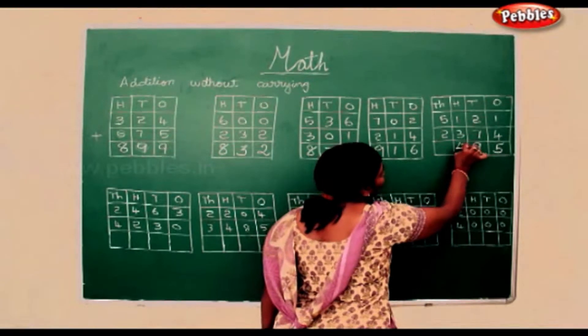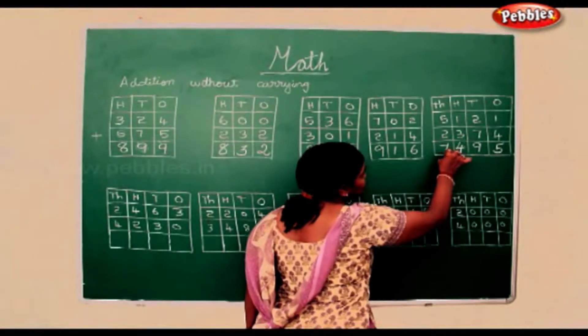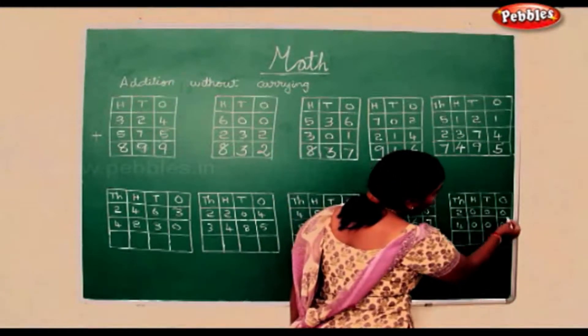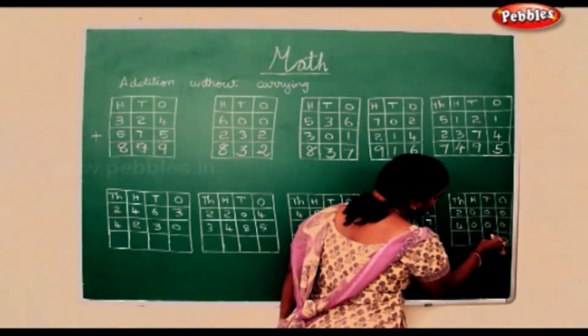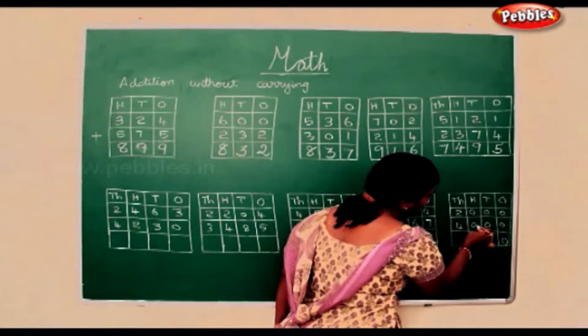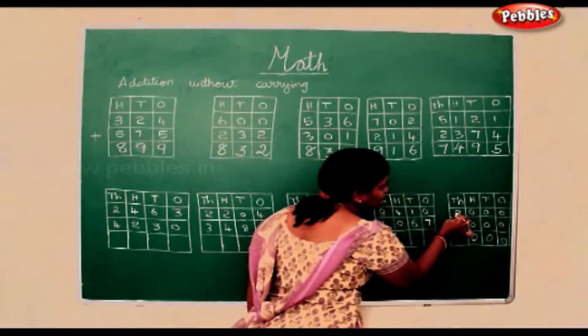5 add 2 is 7. Here 0 add 0 is 0, 0 add 0 is 0, 2 add 4 is 6.